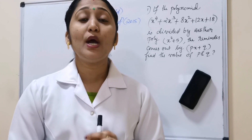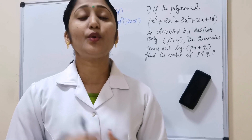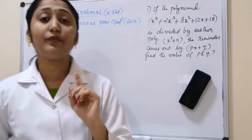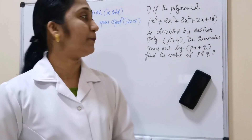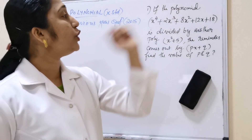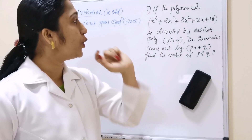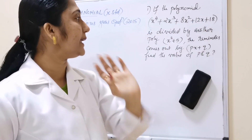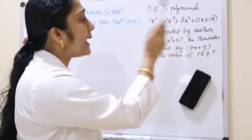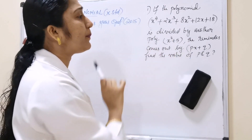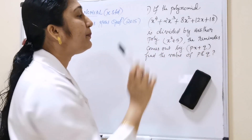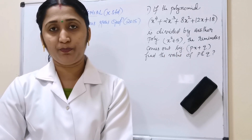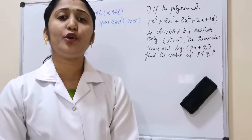Today's question is the 2015 question, 10th standard. If the polynomial x⁴ + 2x³ + 8x² + 12x + 18 is divided by another polynomial x² + 5, the remainder comes out as px + q. Find the value of p and q.